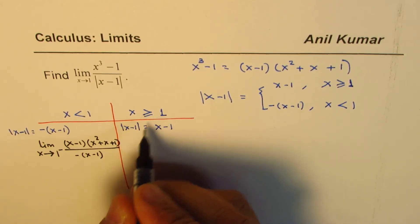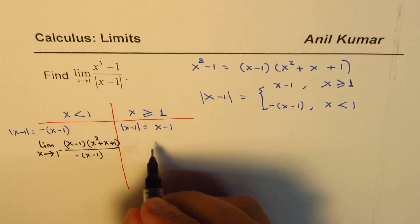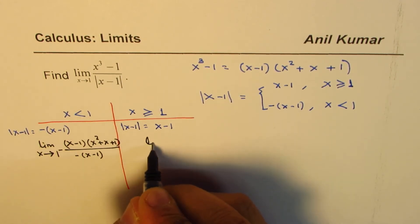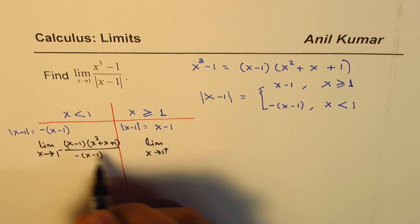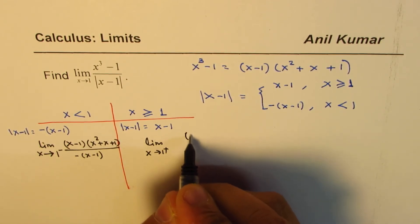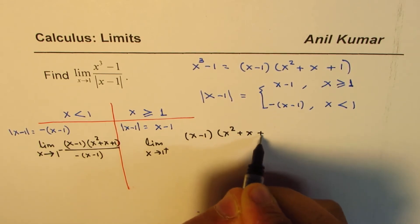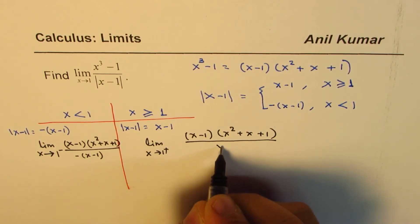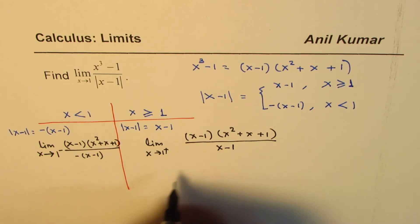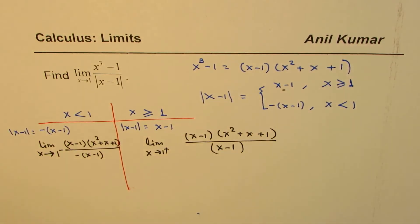On the other hand, when x is greater than or equal to 1, we write the limit as x approaches 1 from the positive side, with numerator x minus 1 times x squared plus x plus 1, divided by x minus 1 — which is positive.